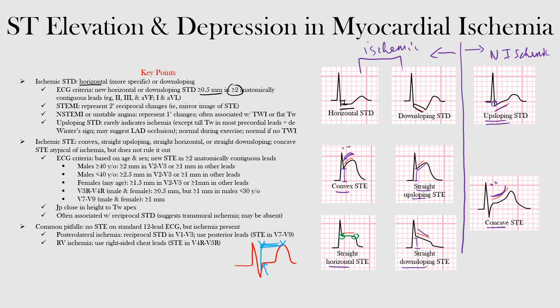A common pitfall: acute transmural ischemia in the posterolateral wall of the left ventricle does not produce ST elevation on the standard 12-lead EKG, because none of the conventional leads can detect the injury currents. Instead, reciprocal ST depression appears in leads V1 through V3. Similarly, right ventricular ischemia can be missed with the standard 12 leads — right-sided chest leads V4R and V5R should be used in that setting.